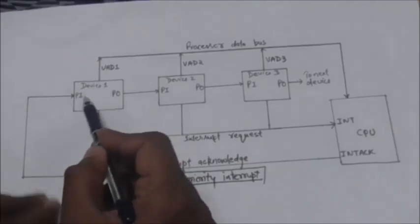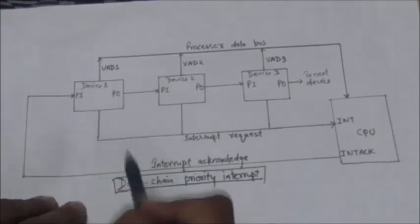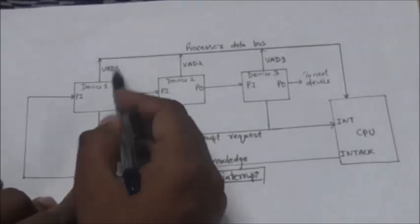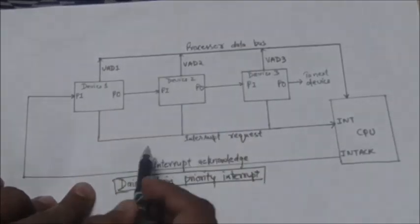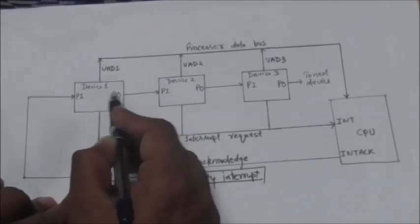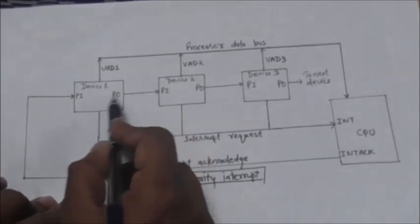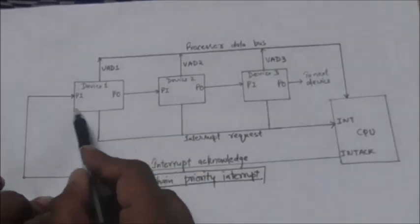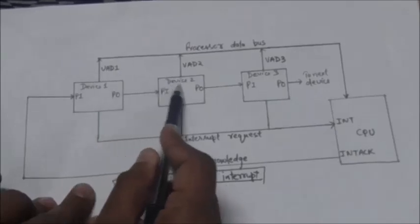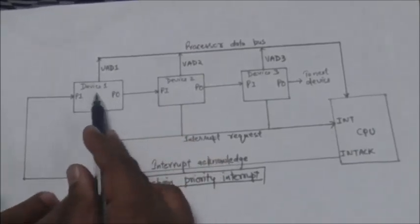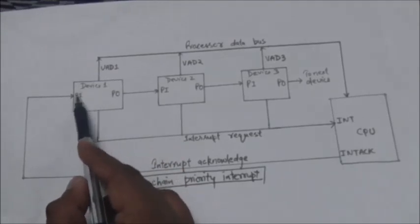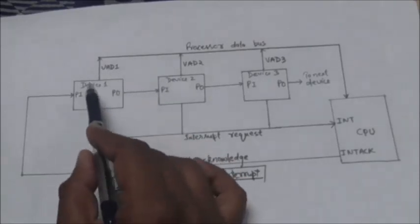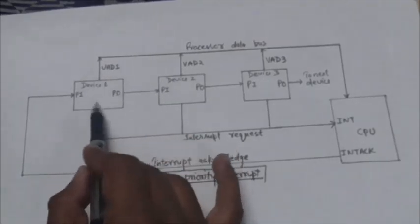Since device one has an interrupt request, it will get its interrupt request serviced first. It will place its interrupt vector address onto the data bus for the CPU, which is used during the interrupt cycle. At the PO output it places a zero, meaning it has blocked the interrupt acknowledgement signal and has not passed it to the second device. So device one gets the chance to be serviced first.